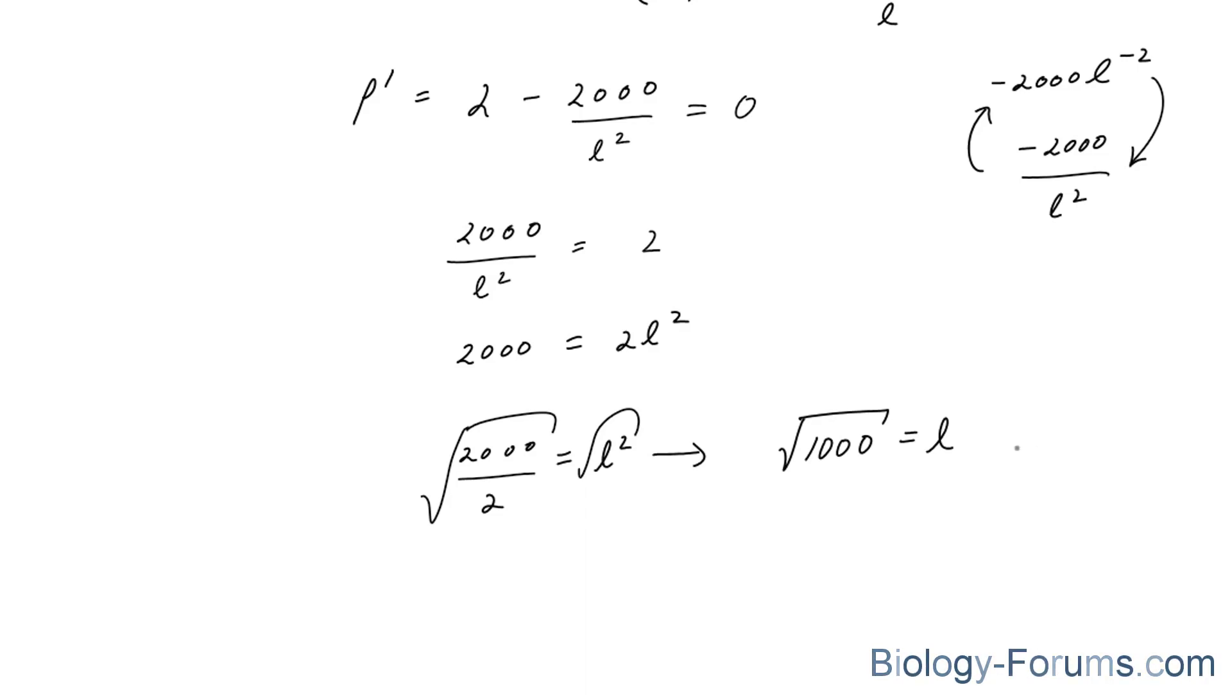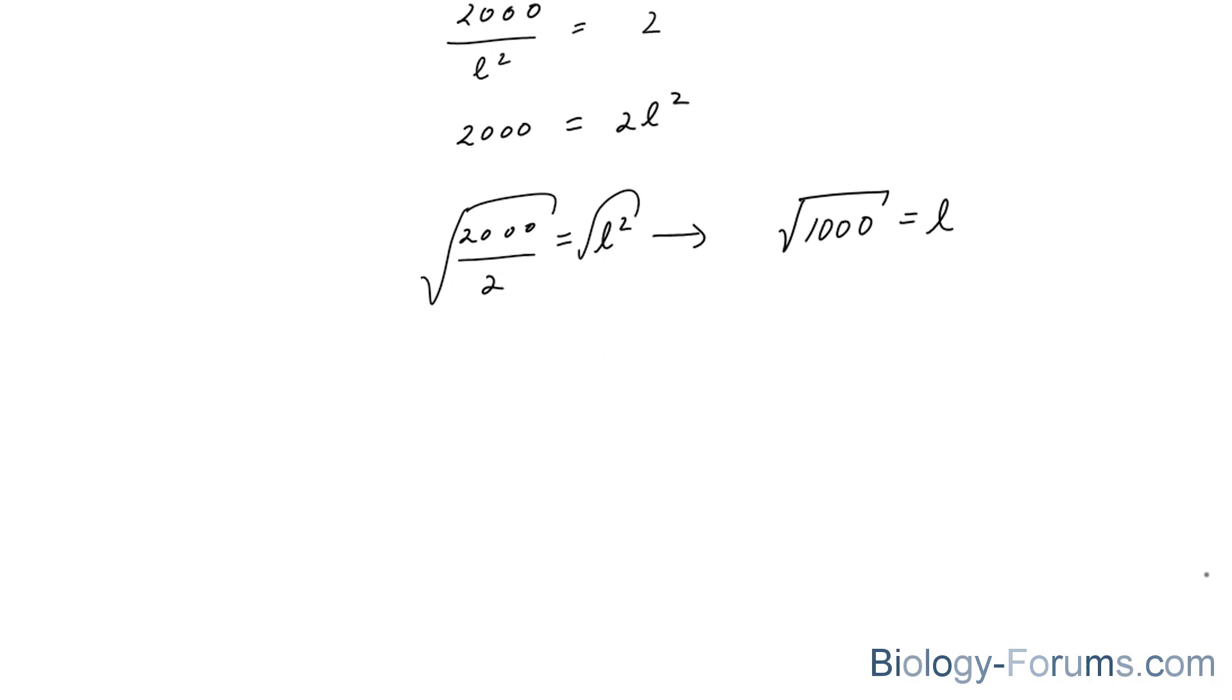So now that we've found our critical point, we have to use the closed interval method to find out whether the first derivative is increasing or decreasing. And from that, we can find out whether it's an absolute maximum or absolute minimum. And the way we do that is we create a chart.